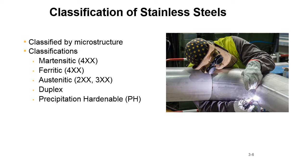There are four classifications of stainless steels — five if we count precipitation hardening — classified by microstructure. You've got martensitic, which is the 400 series; ferritic, which is the 200 series; austenitic, which is the 200 and 300 series; and then duplex and precipitation hardenable stainless steels. All of these have their strengths and weaknesses — consequently, that's why they were developed.